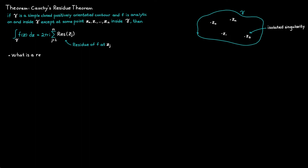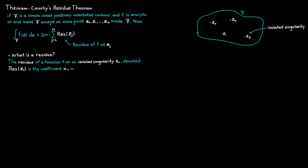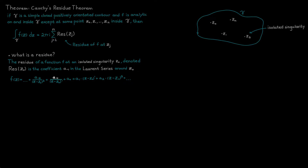So what is a residue? Some of you might remember this because we talked about it briefly when we did Laurent series. The residue of a function f at an isolated singularity c0 is the coefficient a₋₁ in the Laurent series expansion of this function around the point c0. So if I write out the Laurent series expansion around some isolated singularity c0, then the residue of this function at c0 is simply the coefficient a₋₁ in that expression.